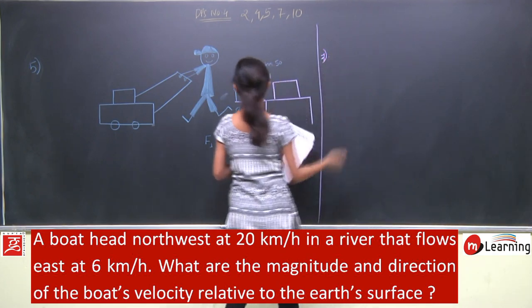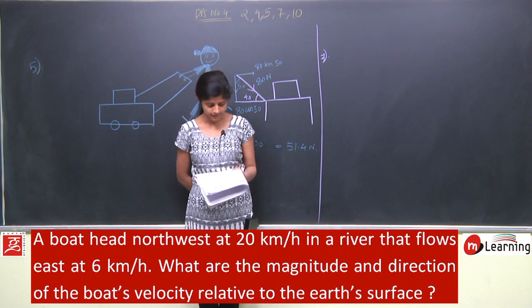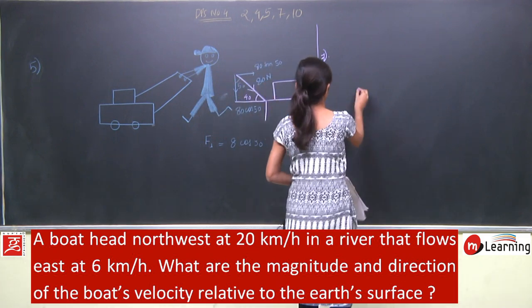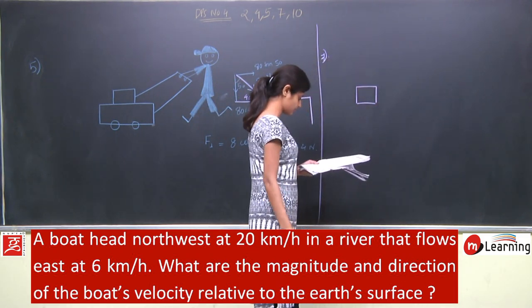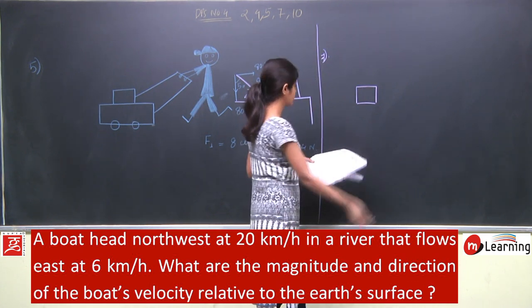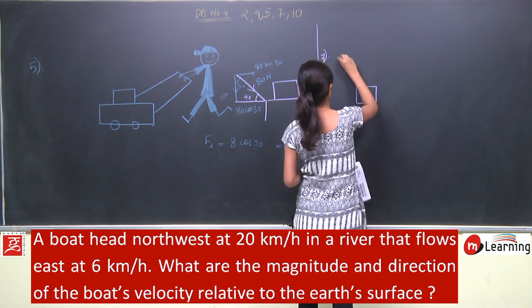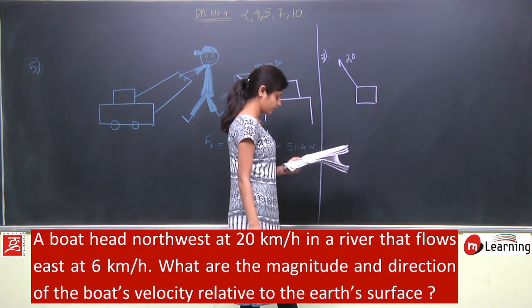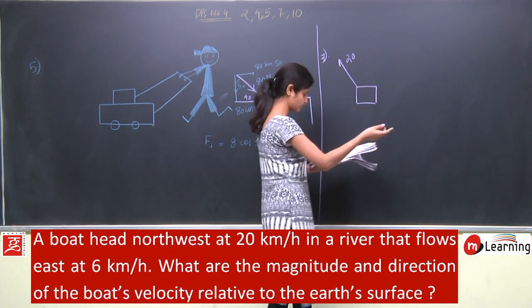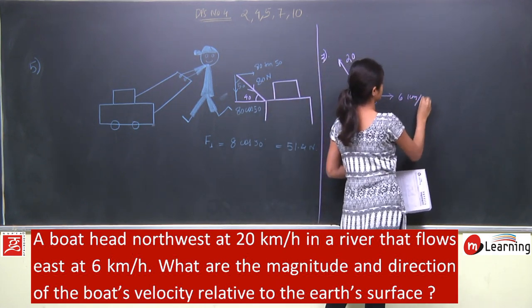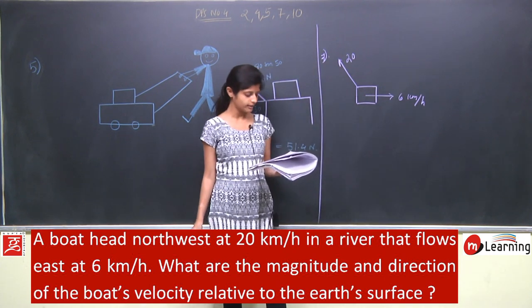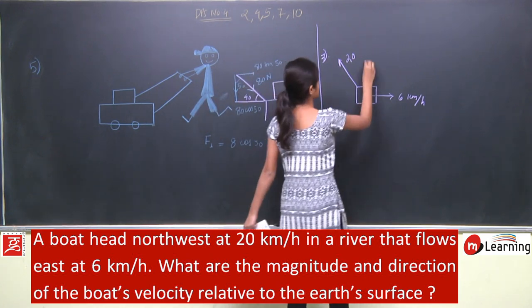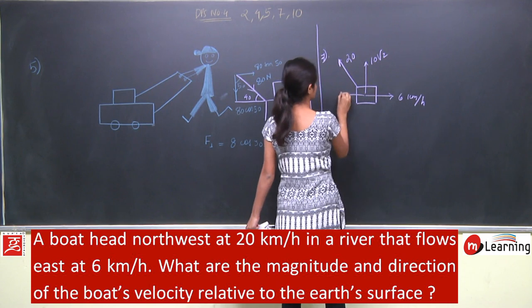Next is question number 7. A boat heads northwest at 20 km per hour in a river that flows east at 6 km per hour. This boat's velocity is 20 km per hour northwest — northwest means this is north and this is west, so it is 20 km per hour in this direction. In a river that flows east at 6 km per hour. What are the magnitude and direction of the boat's velocity relative to the earth's surface? Iska resultant nikal na hai. This will be 10·root 2 and this also will be 10·root 2.